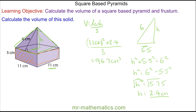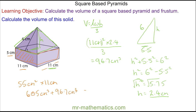Now we can work out the volume of the cuboid. The cross-sectional area is five times eleven, which is 55 centimeters squared, multiplied by the depth of 11 centimeters, giving a cuboid volume of 605 centimeters cubed. Adding the pyramid volume of 96.7 centimeters cubed, the total volume is approximately 701.7 centimeters cubed.